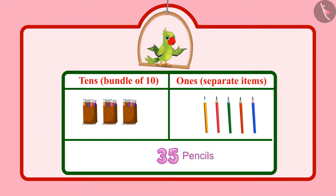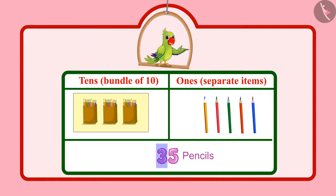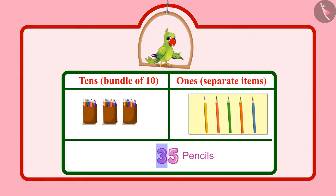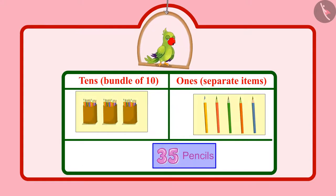In 35 pencils, 3 means 3 tens and 5 means 5 units, which means a total of 35 pencils.